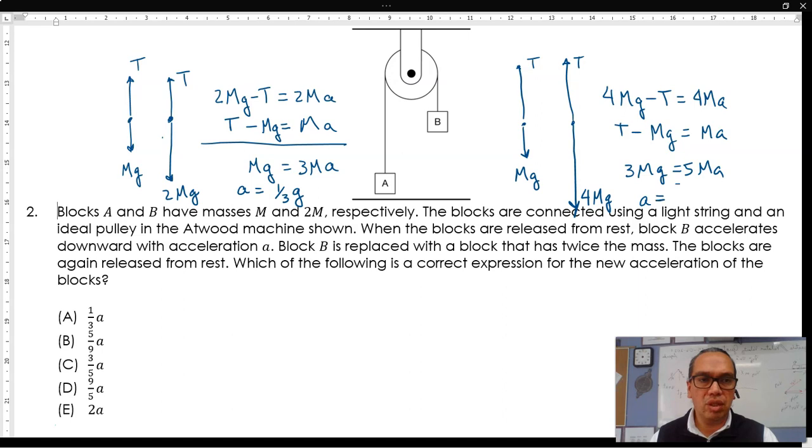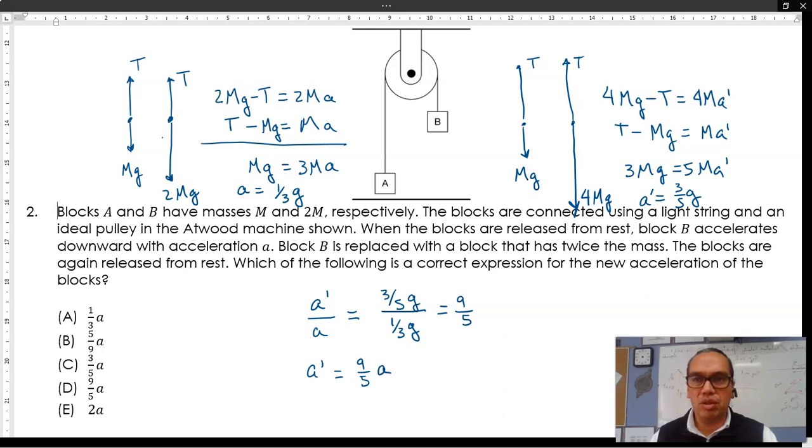Or that the acceleration is 3 fifths of the acceleration due to gravity. The relationship then is that your A prime, the new acceleration, divided by A is going to be equal to 3 fifths of G divided by 1 third of G, which is equal to 9 fifths. Therefore, the new acceleration is equal to 9 fifths the old acceleration, and that is option D.